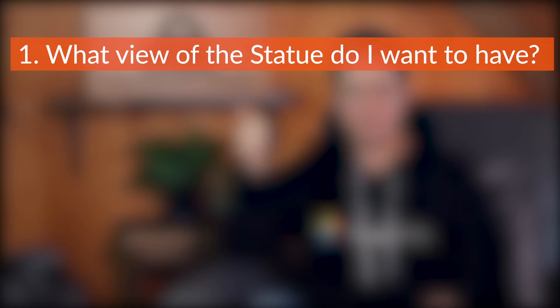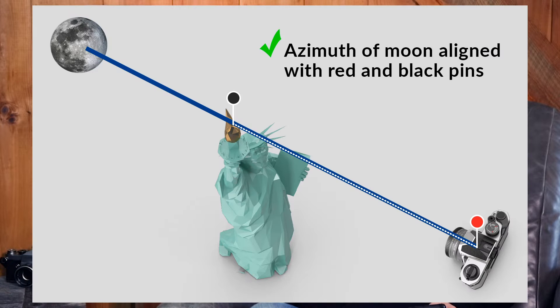To help answer this question, I need to think about two things: what view of the statue do I want in my shot? When I searched, most images I found were of the back of the statue with the moon above. But is it possible to capture the moon behind the torch with a front view of the statue? This might not be possible given the azimuth or direction of the moon relative to my chosen shooting position, or there may be no access to the vantage point. Depending on your location, you'll need to think about public access and other objects in the line of sight.